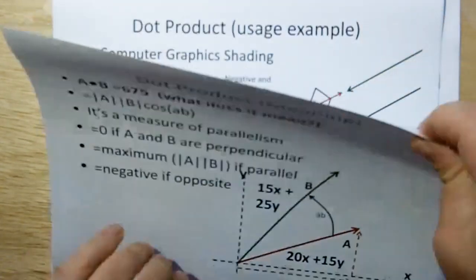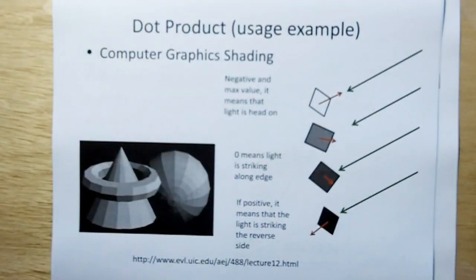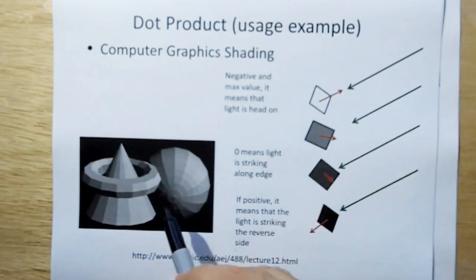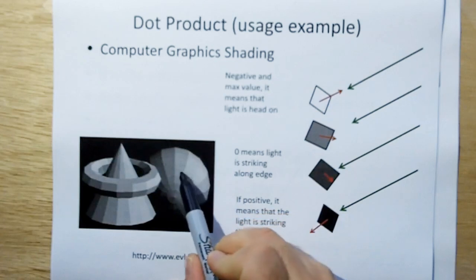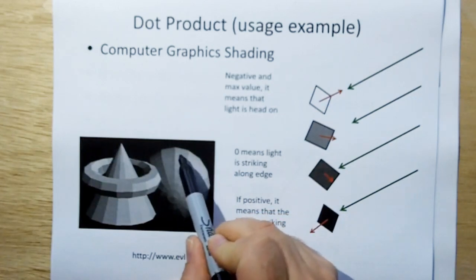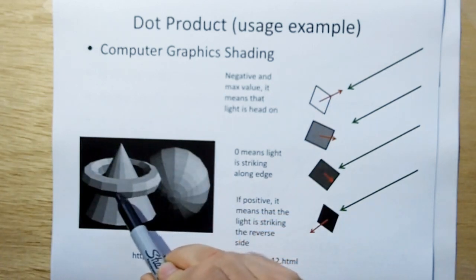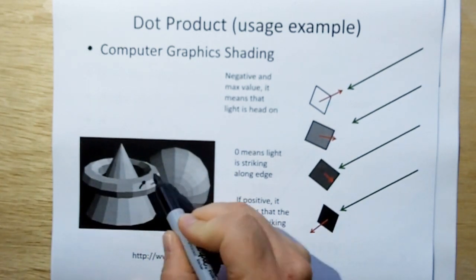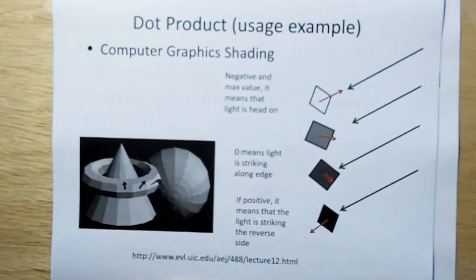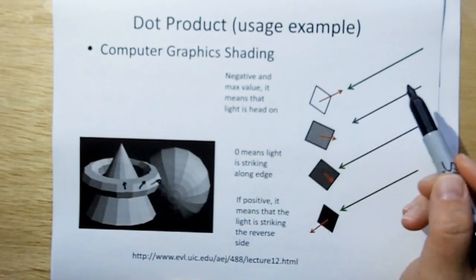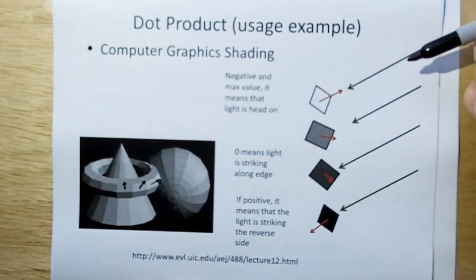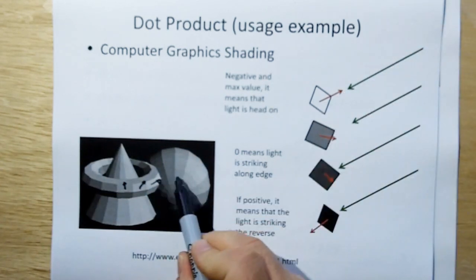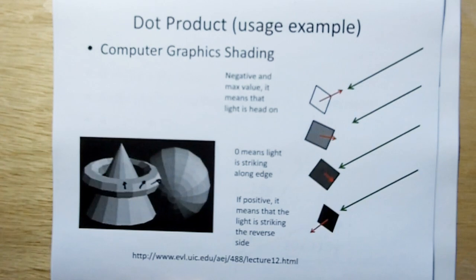So where do we use something like this? Well, in computer graphics, we typically divide objects up into tiny little geometric forms, like these little parallelograms here. And then we draw little normals to the face of each one of those parallelograms. And that little normal, based on its direction relative to the oncoming light ray, will tell how much shading or lightness or darkness to color that particular little plate.